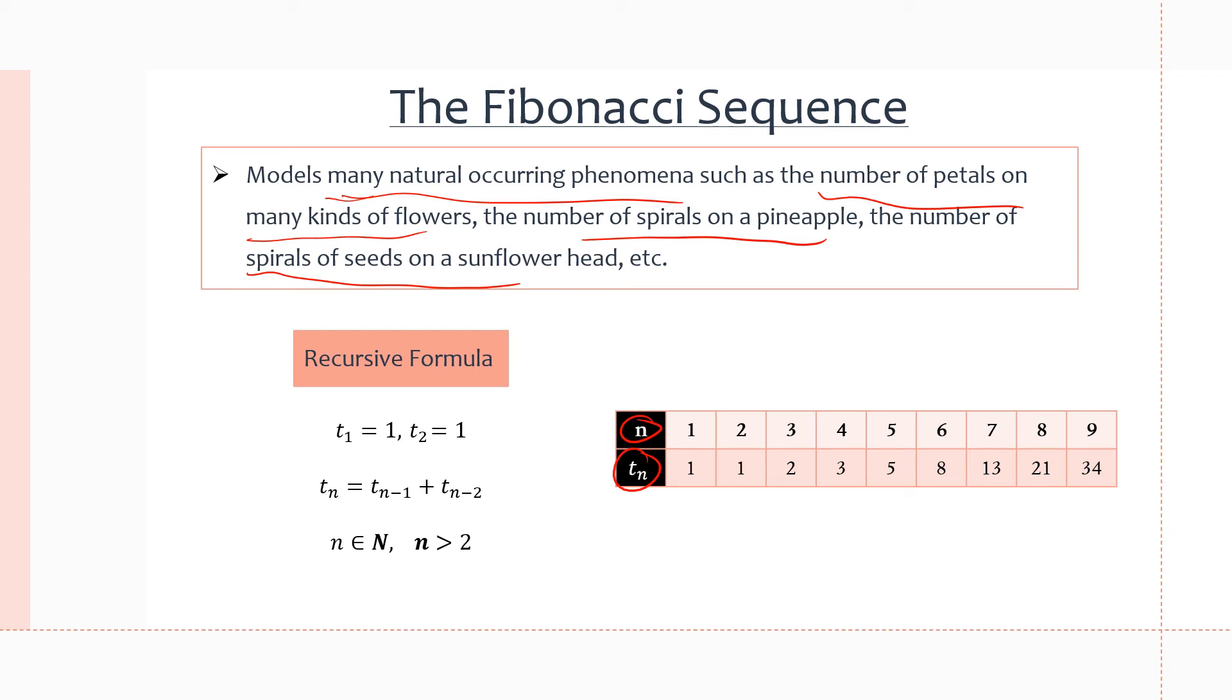And we can see how the recursiveness of this formula works and how now instead of relying on one of the previous terms to get the next term, we're relying on two of its previous terms as we can see in the formula. So that's why it's a little different than what we've done so far.